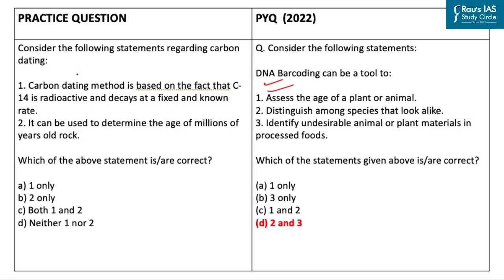The practice question says: consider the following statements regarding carbon dating. The first statement is that the carbon dating method is based on the fact that C-14 is radioactive and decays at a fixed known rate. This statement is correct, as the dating method makes use of the fact that the isotope of carbon C-14, with atomic mass 14, is radioactive and decays at a well-known rate.